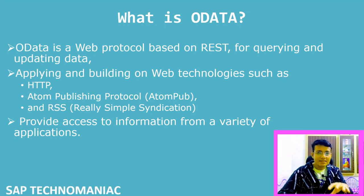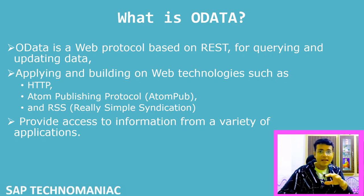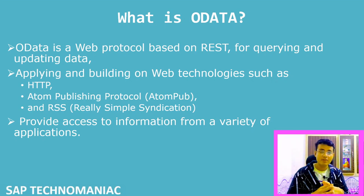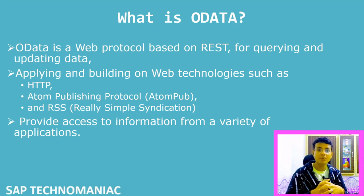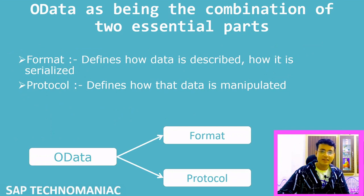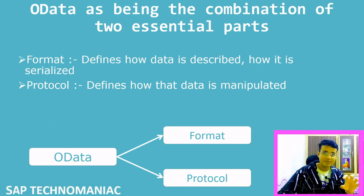Basically, these two technologies — ATOM and RSS — help us understand when we first see an OData service, because understanding where that particular format comes from is very important for us. OData is a combination of two essential parts: one is the format, and second is the protocol.